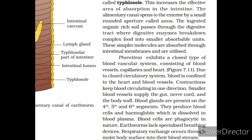Pheretima exhibits a closed type of blood vascular system consisting of blood vessels, capillaries and heart. Blood is confined to the heart and blood vessels due to the closed circulatory system. Contractions keep blood circulating in one direction. Smaller blood vessels supply the gut, nerve cord and body wall. Blood glands are present on the 4th, 5th and 6th segments; they produce blood cells and haemoglobin, which is dissolved in blood plasma. Blood cells are phagocytic in nature. Earthworms lack specialized breathing devices; respiratory exchange occurs through the moist body surface into their bloodstream.